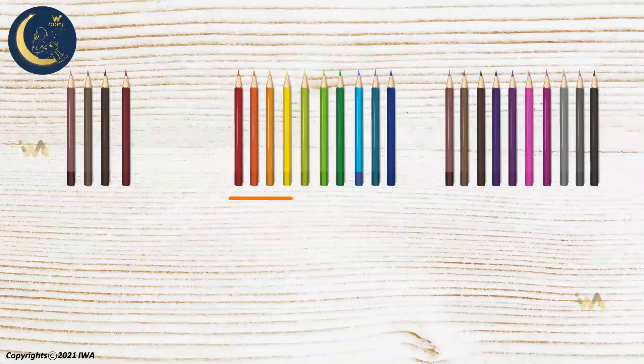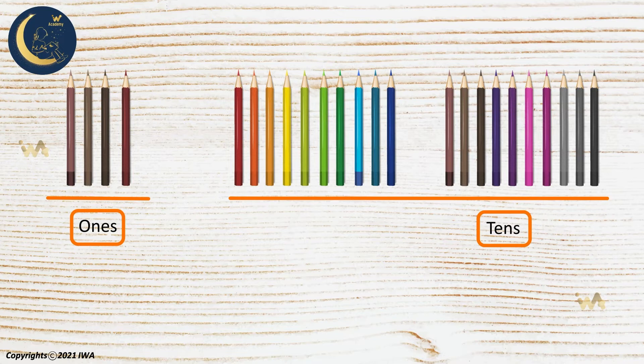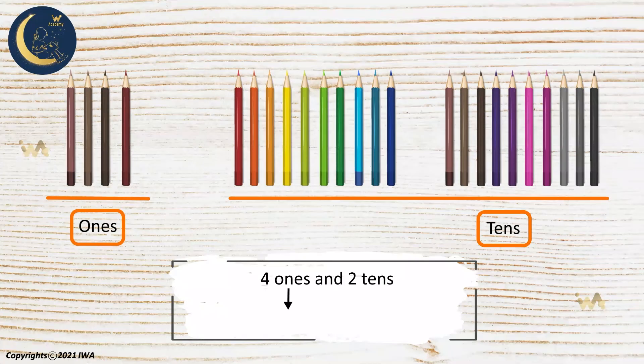Now, my dears, we will take this group of pencils which is made up of four ones and two tens. Look at each number. The number four, as in four ones, stands for four pencils.